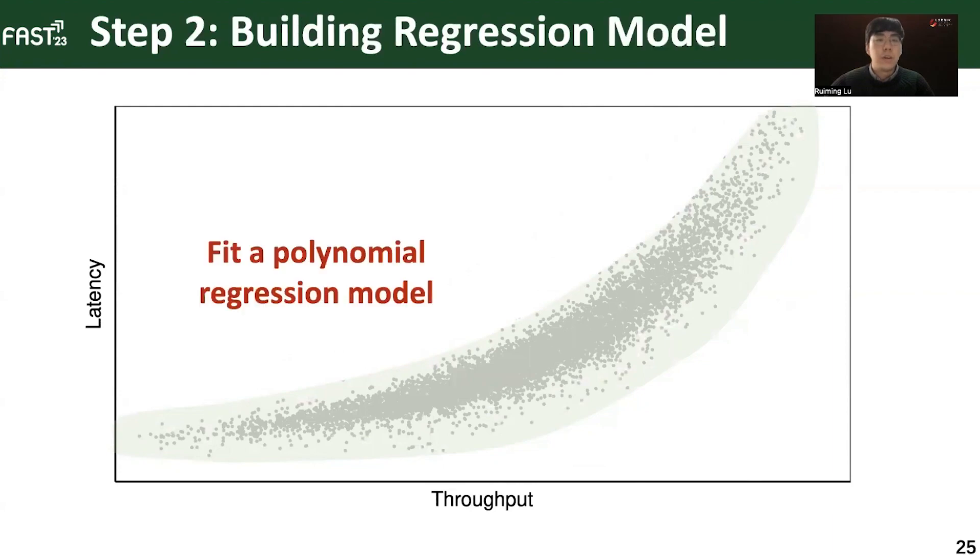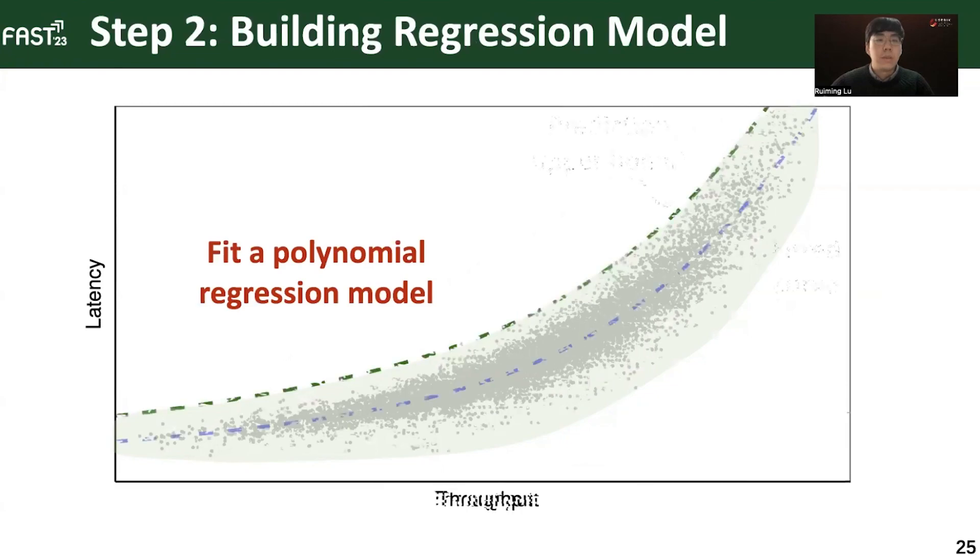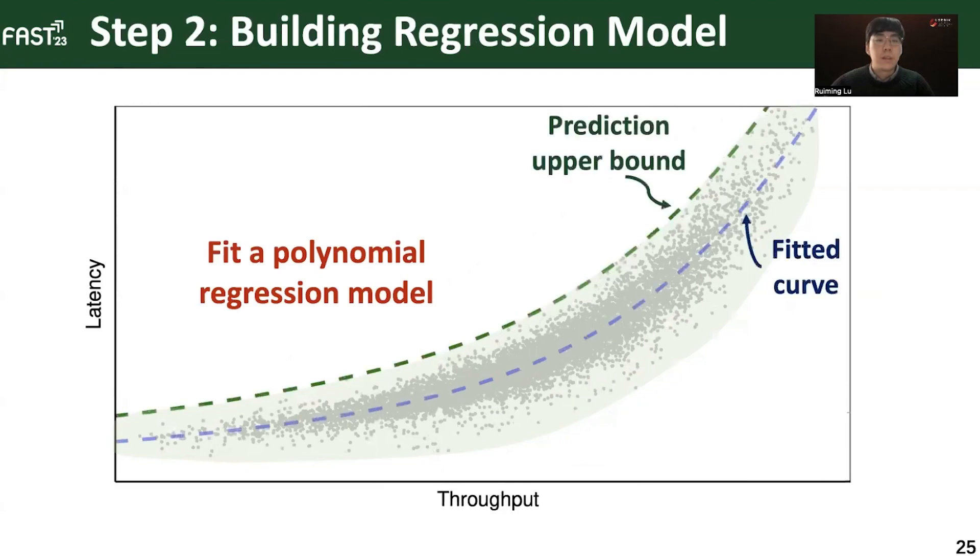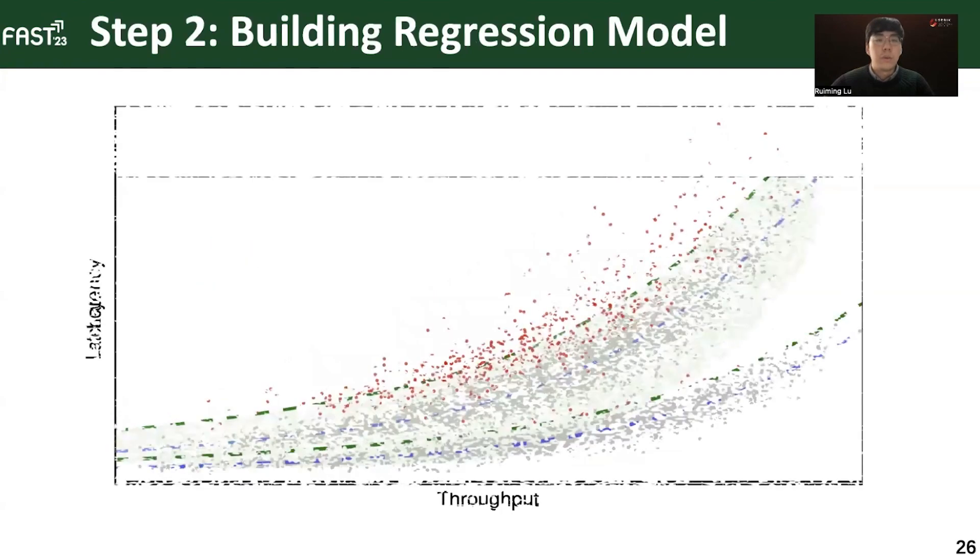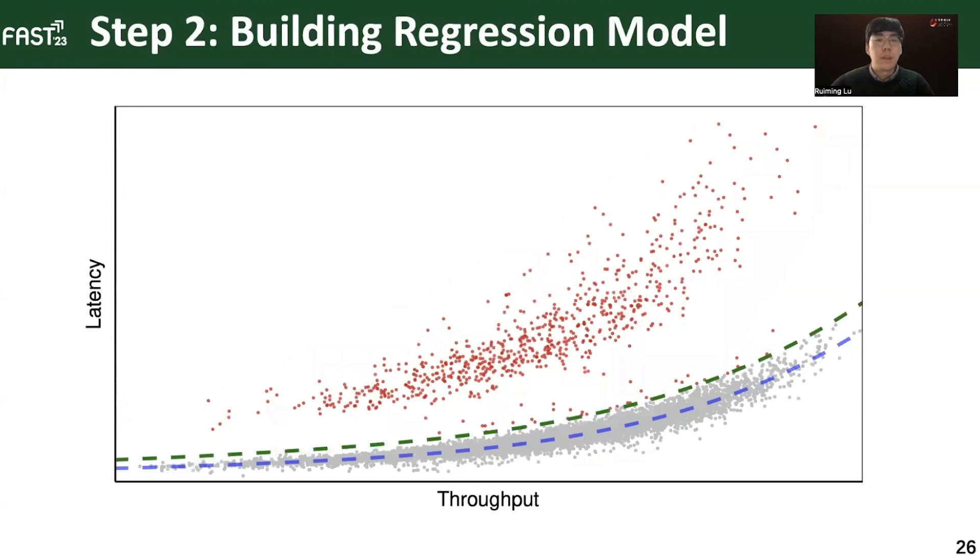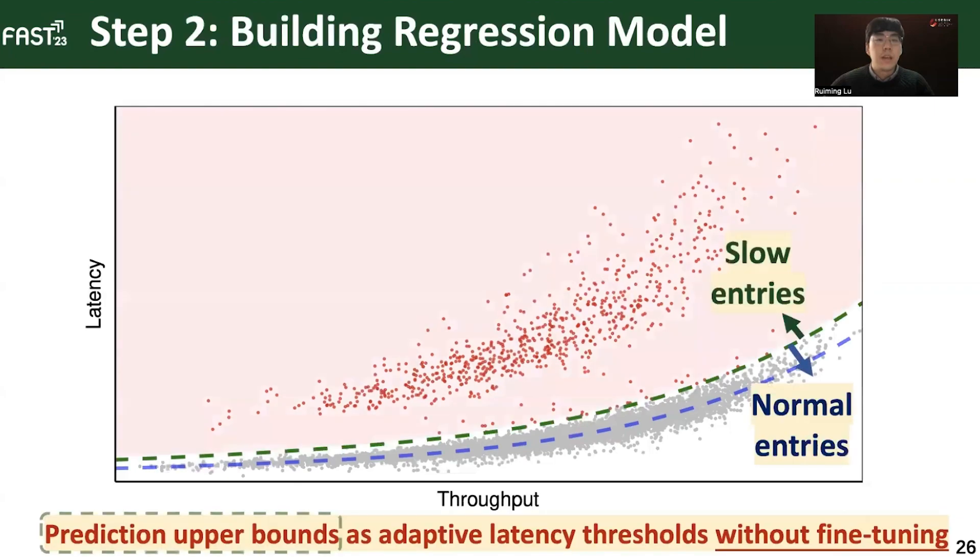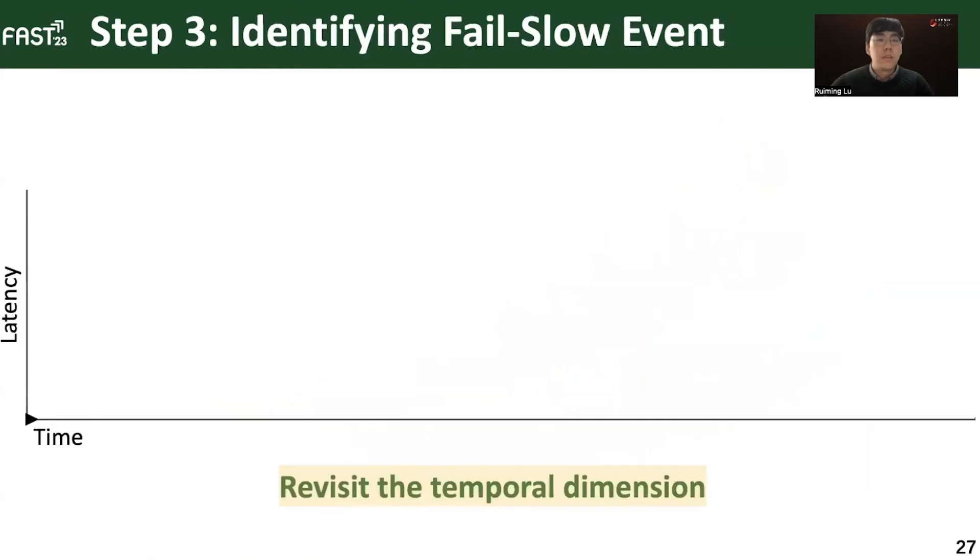Then, we fit the polynomial regression model and obtain its prediction upper bounding green line as an adaptive threshold over latency. Then, we put this regression model back into our raw data to identify the fail-slow entries. Specifically, any entries above the green line are deemed as slow entries and any entries below the line are normal.